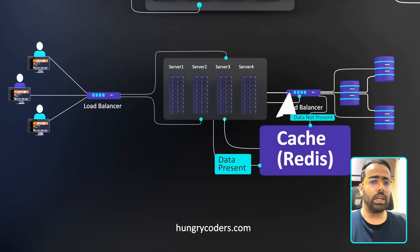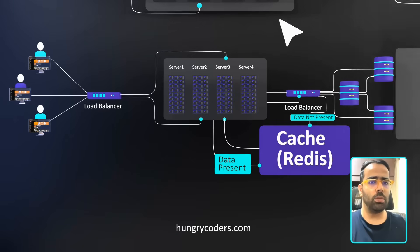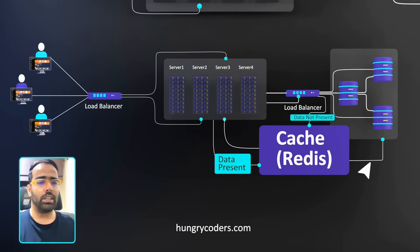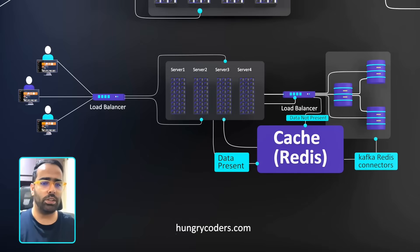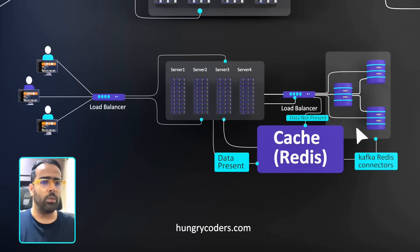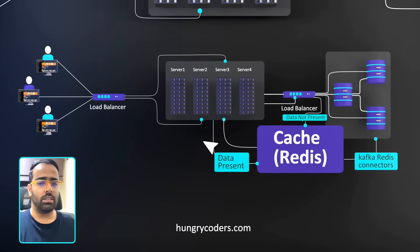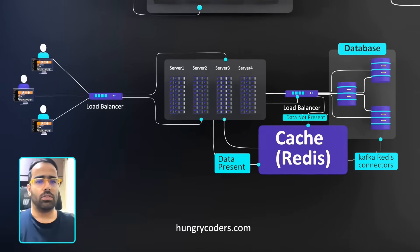One challenge with caching is keeping the cache in sync with the database. When a write operation happens, that record must also be updated in cache. We can use Kafka Redis connectors for this — Kafka's event-driven messaging connectors detect any update in the database and automatically update the cache, so consumers always get fresh data.